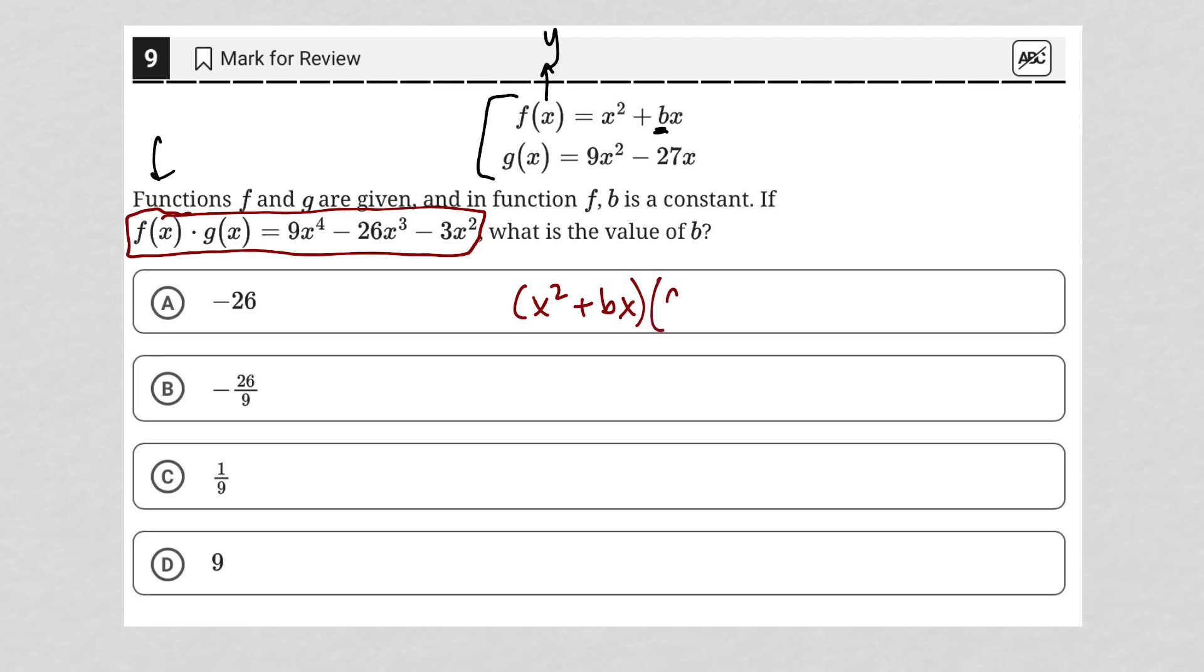g of x is 9x squared minus 27x. So that's my f of x times g of x. And the question tells me that that should equal 9x to the fourth minus 26x to the third minus 3x squared. So let's go ahead and simplify this now.